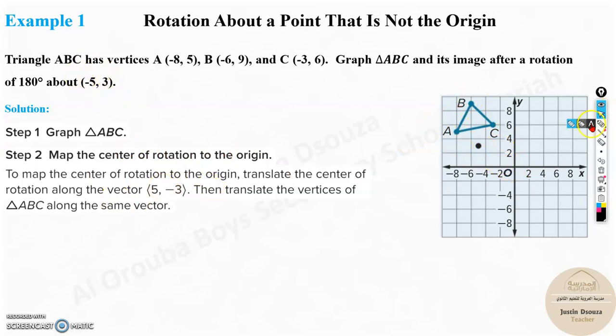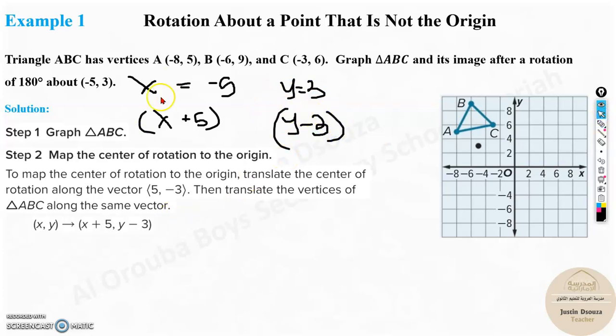So we will first map the center of the rotation to the origin. That is by adding this vector. See now here x value is how much? Minus 5, right? This would be x plus 5 now. And y is 3. So it will be y minus 3. What you do is very simple. You need to add 5 to this and minus 3 from this. Now why? That is because from this point you have to go 5 units to the right to the center and 3 units down to come to the center.